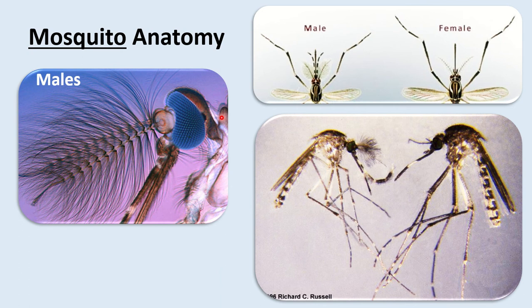For mosquito anatomy, it's important to remember that males and females look different — they are sexually dimorphic. They both have a prominent proboscis, but males have fuzzier, plumose antennae and are also smaller than females. Females are larger because they need to expand their abdomen to take in blood and carry a large clutch of eggs. I have counted over 400 eggs per egg raft of a Culex species.